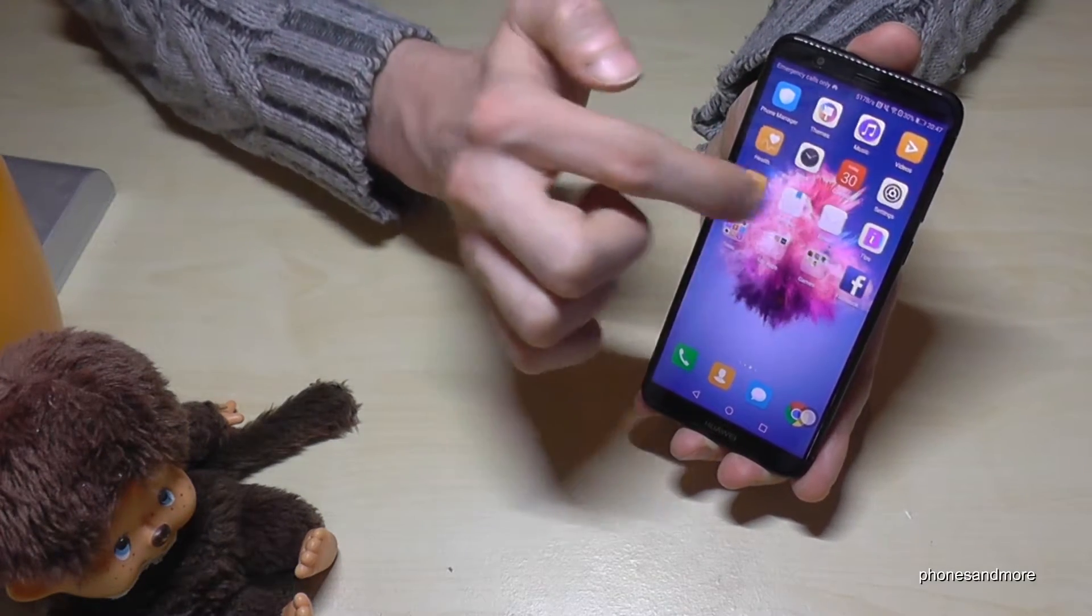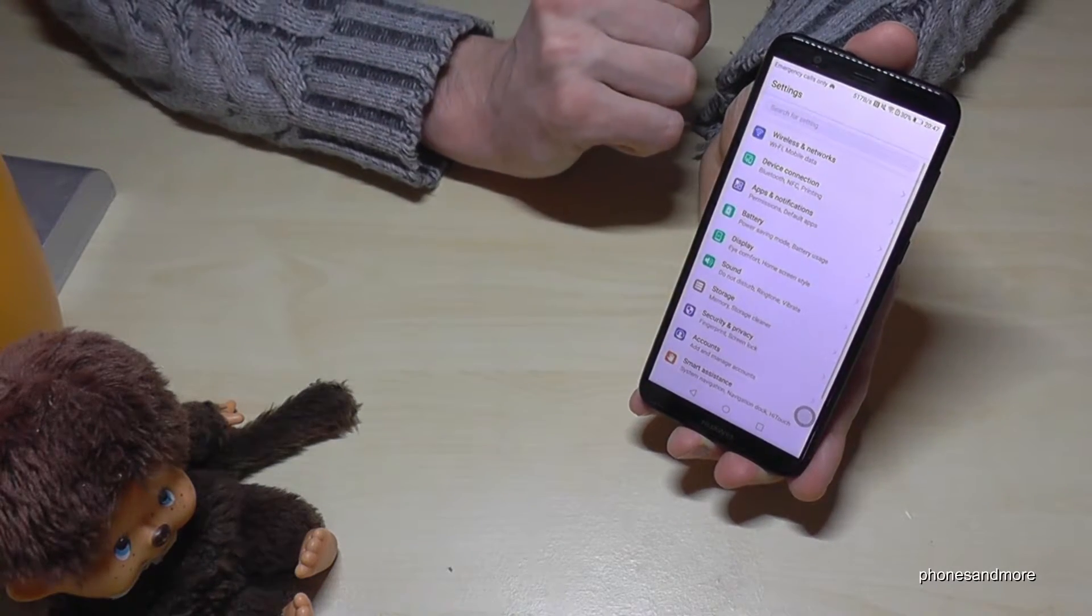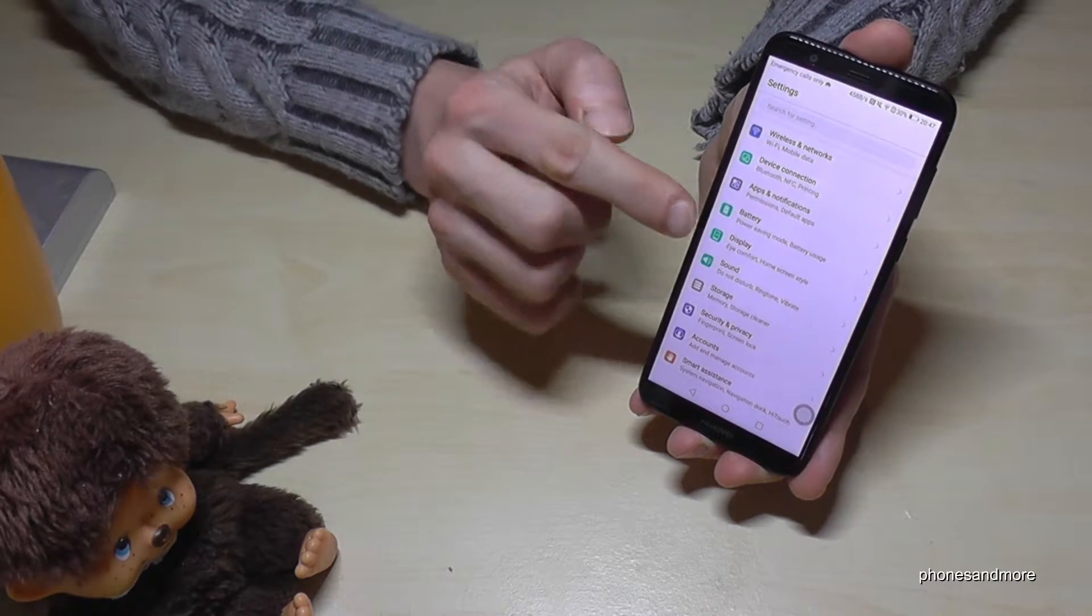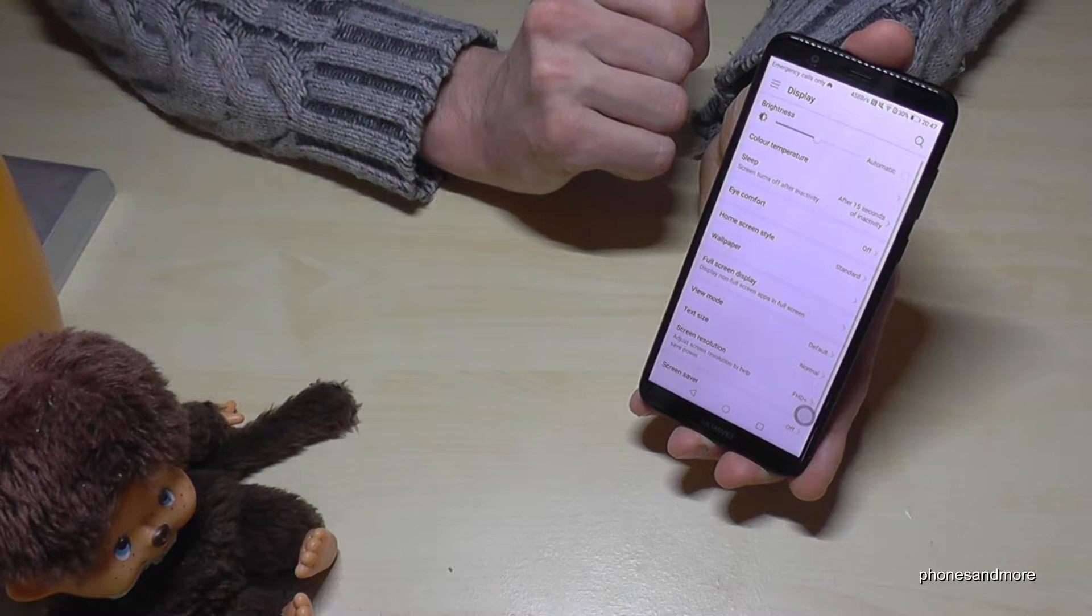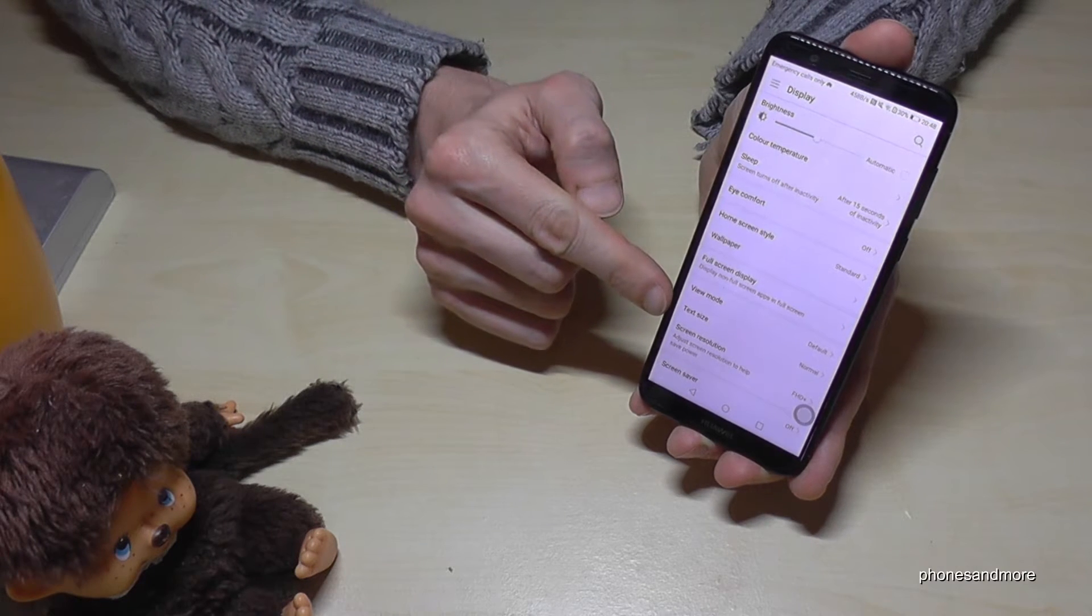So first of all, let us go to the settings. Then let's go to display. So then we need to go to text size, that is here.